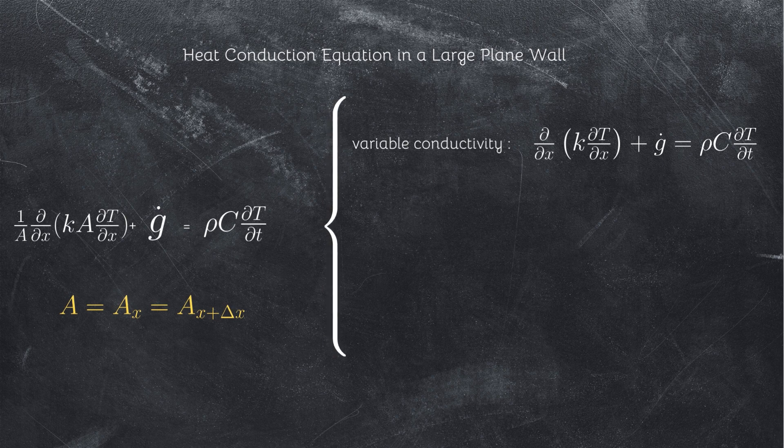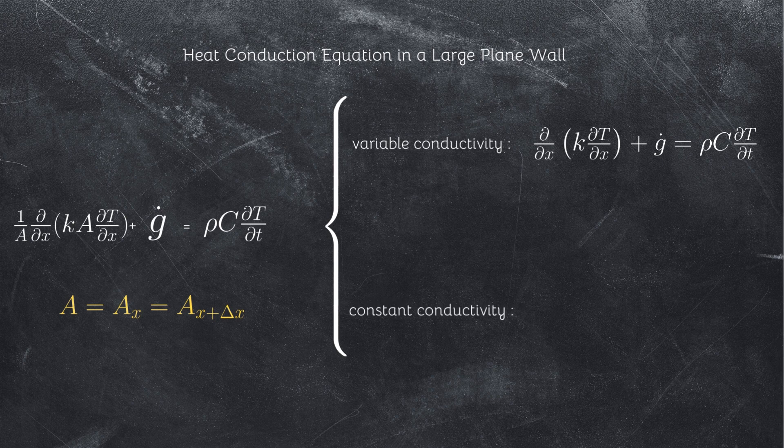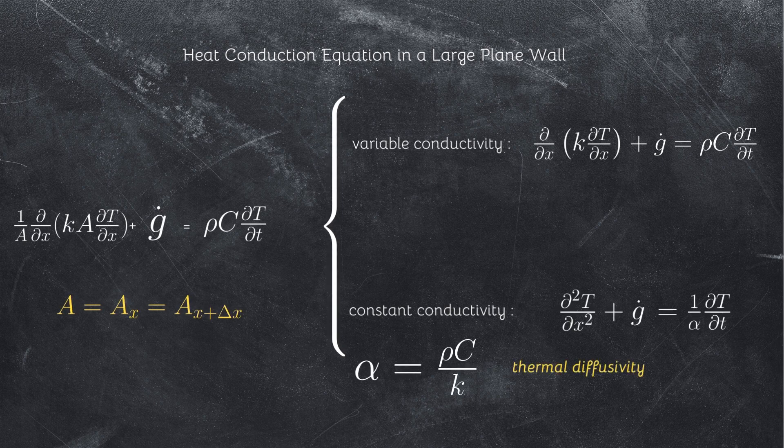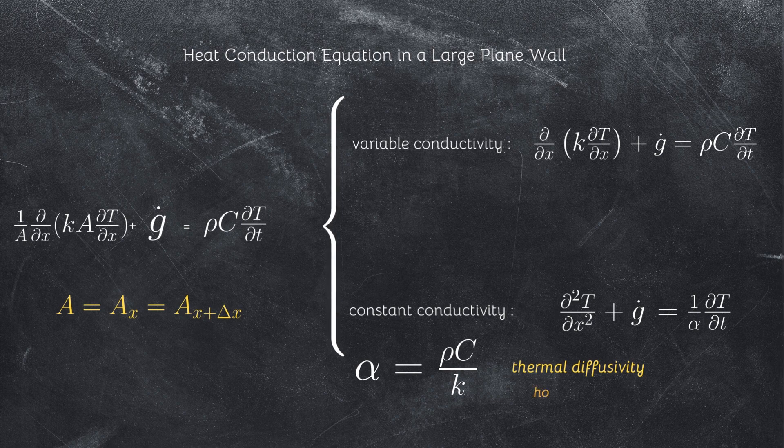However, the thermal conductivity in most practical applications can be assumed to remain constant at some average value. The equation above in that case reduces to where the property alpha is the thermal diffusivity of the material and represents how fast heat propagates through a material.